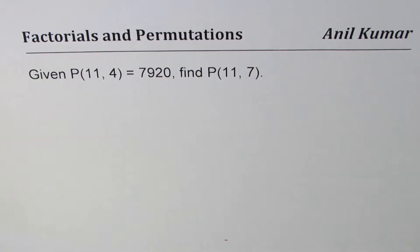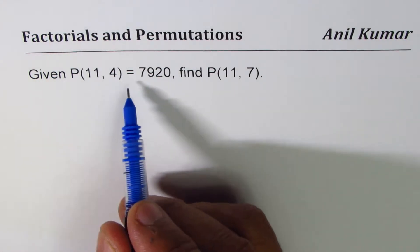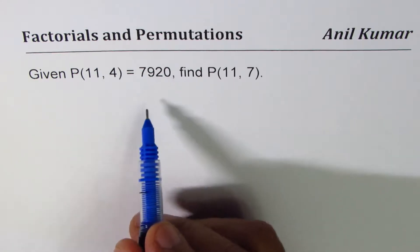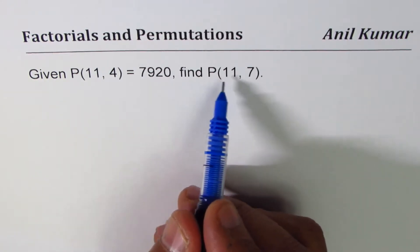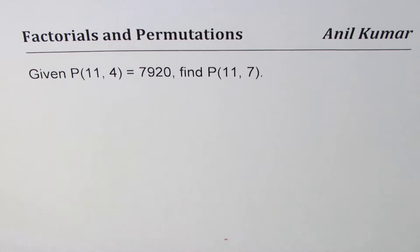Here we are given P(11,4) equals 7920. We need to find P(11,7). You can pause the video, answer the question, and look into my suggestions.